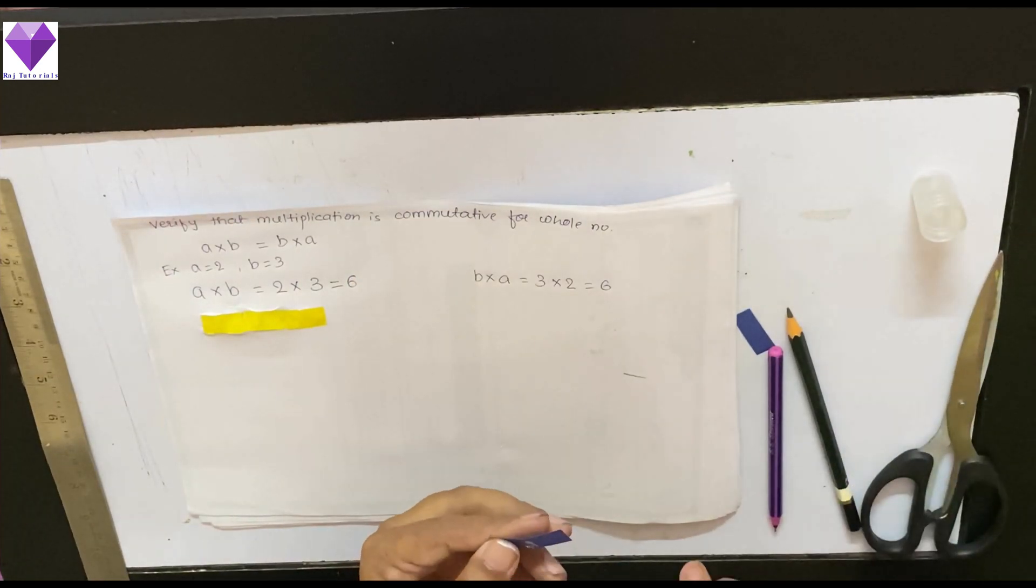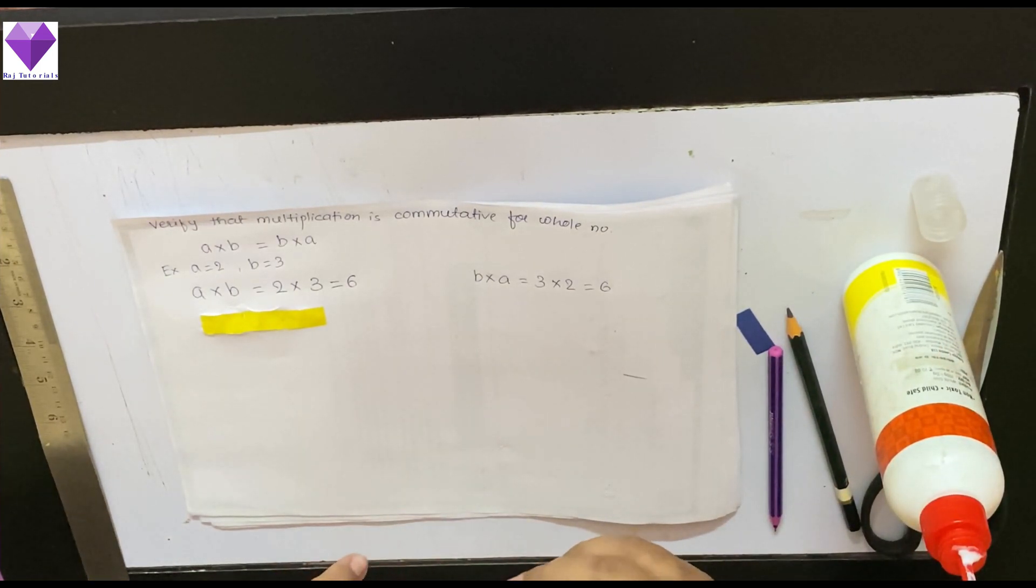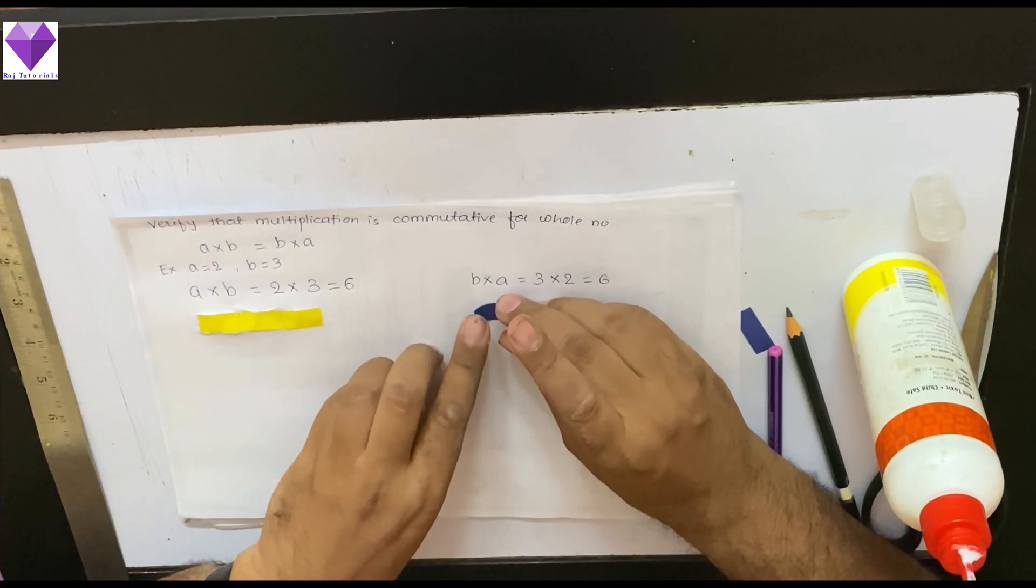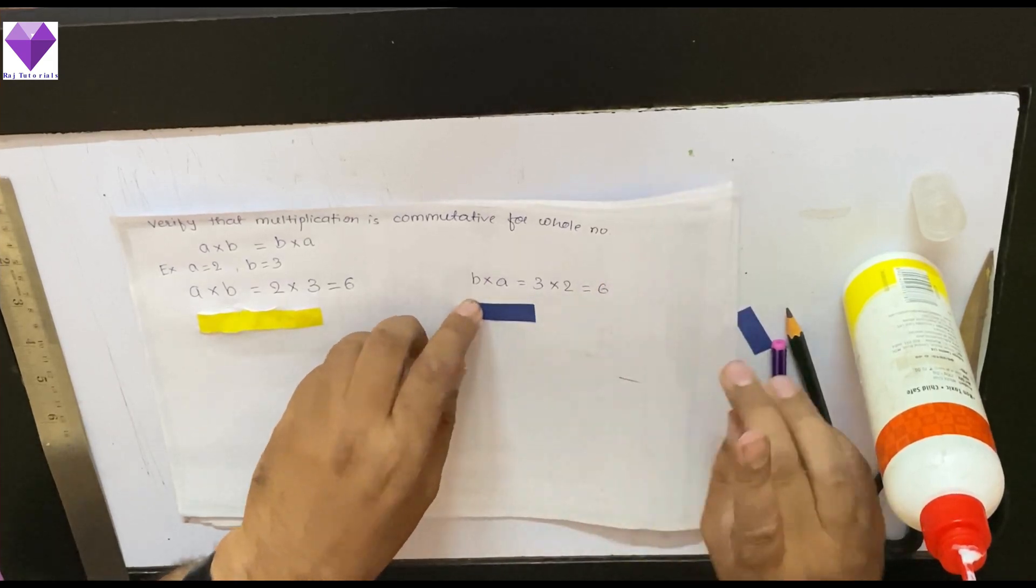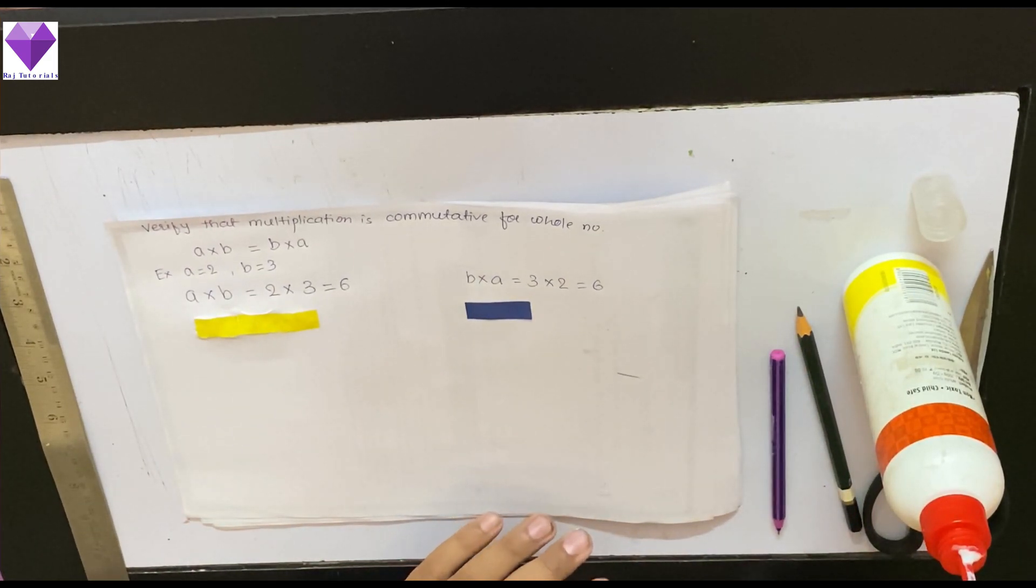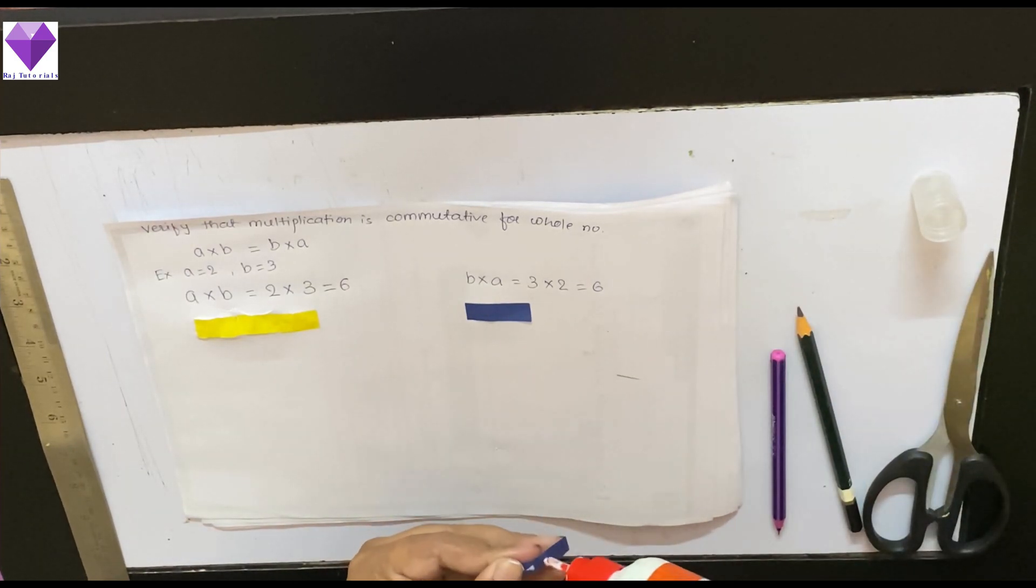Now, in the second case, I will take 2 strips of 3 centimeter each and I will stick them together and make a group. Why? Because 3-2s are is 6. So, first number is my table of that many centimeter strip I am taking and second is the number of strips.